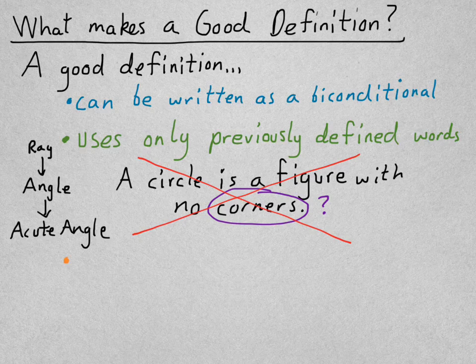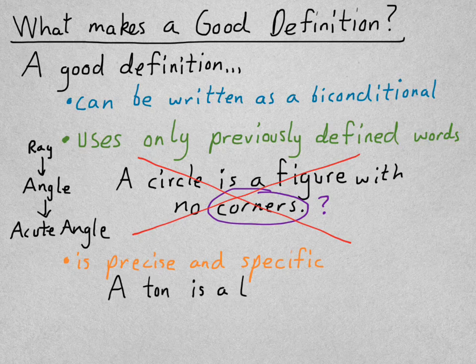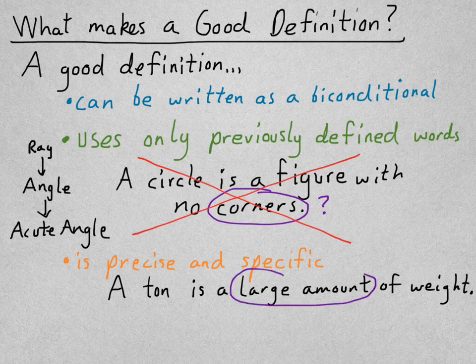The other feature of a good definition is that it's precise and specific. Here's another non-example. A ton is a large amount of weight. Which, while that may be true, we're not being very specific. How much is a large amount, anyway?